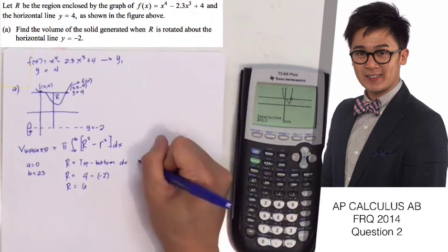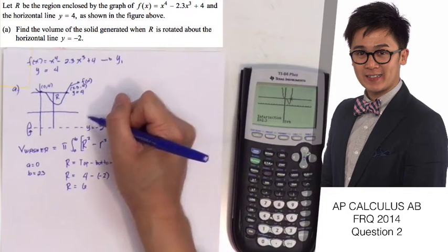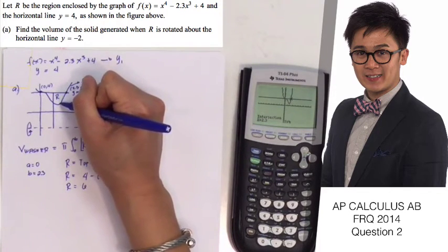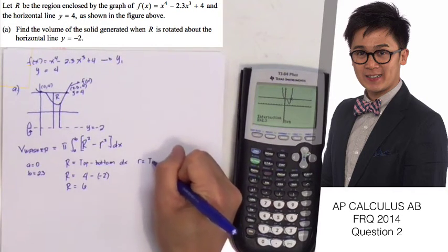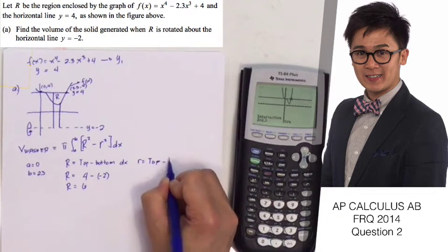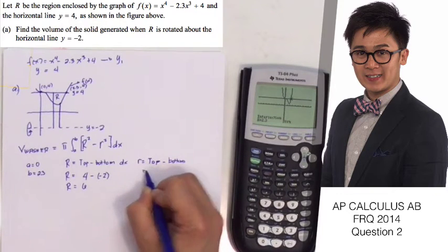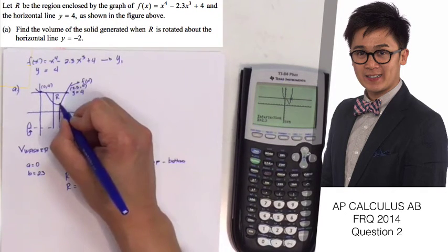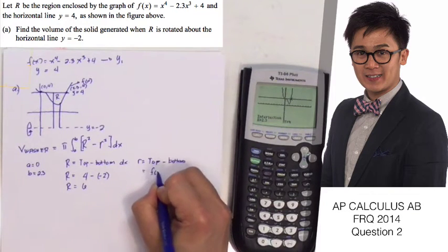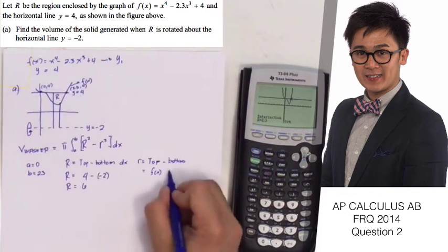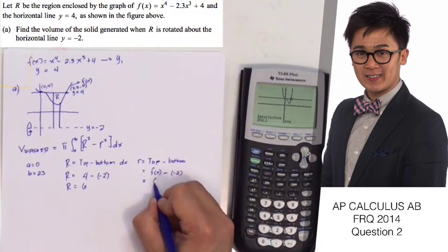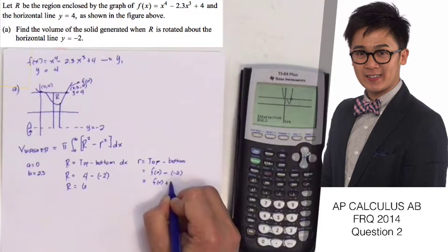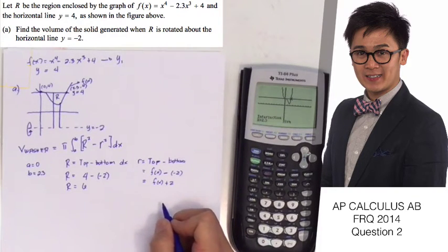For the small r, it comes from the function f(x) down to y = -2. Using the same top-minus-bottom approach, the top function is f(x) and the bottom is -2. So the small r equals f(x) + 2.